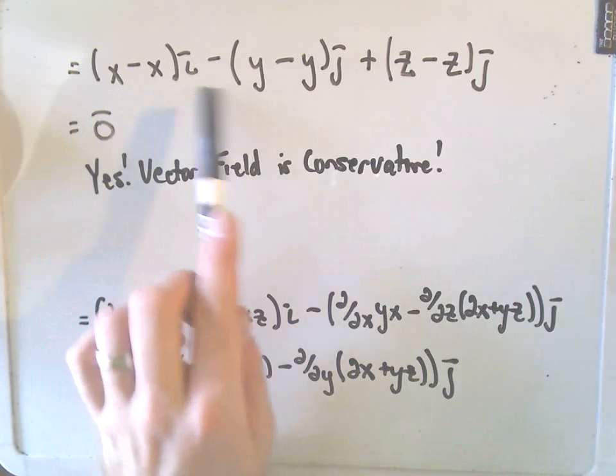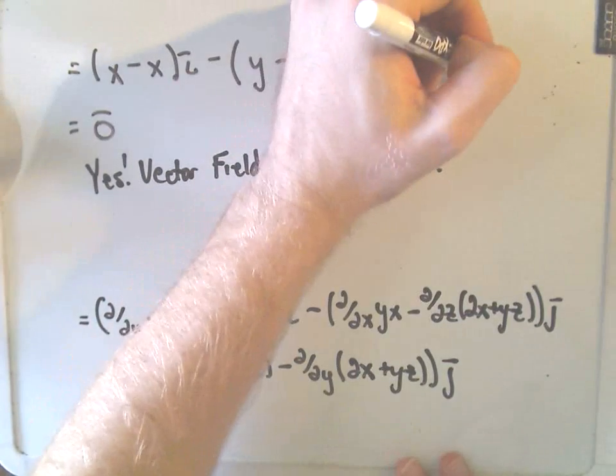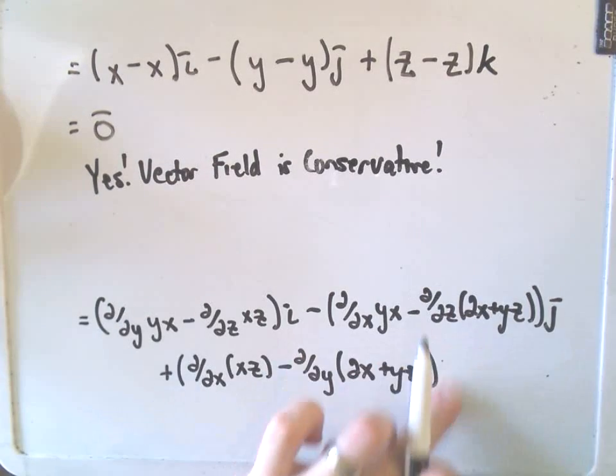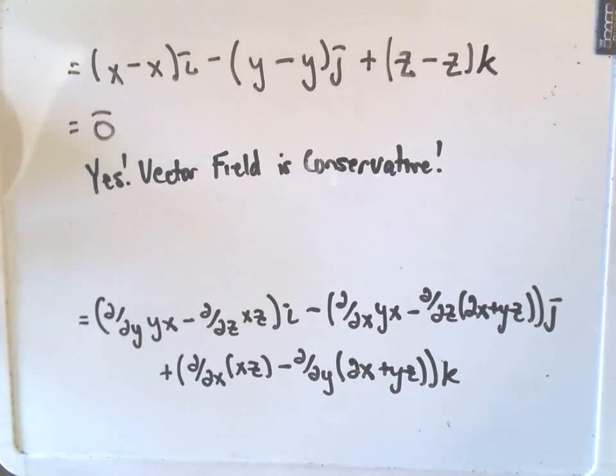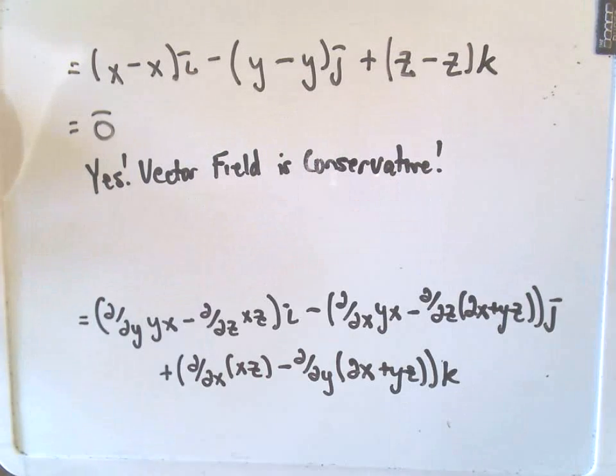Again, if any one of these, either the i, the j - I did this in the last video as well - this should be k. It should be k down here as well. If any one of these i, j, and k components are not 0, if any part doesn't cancel out, then again, that simply means that it's not conservative.